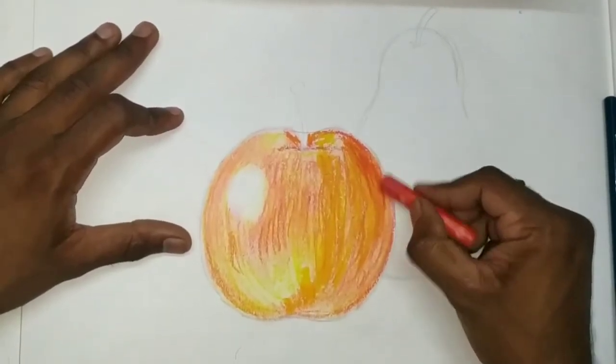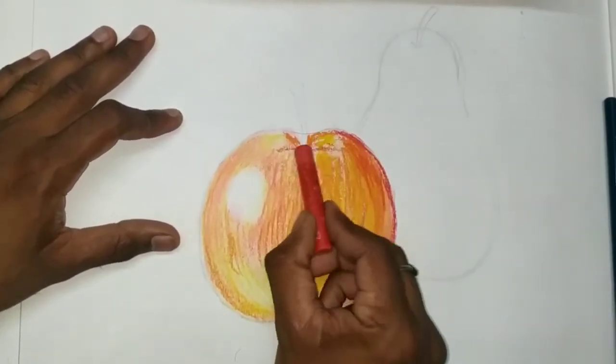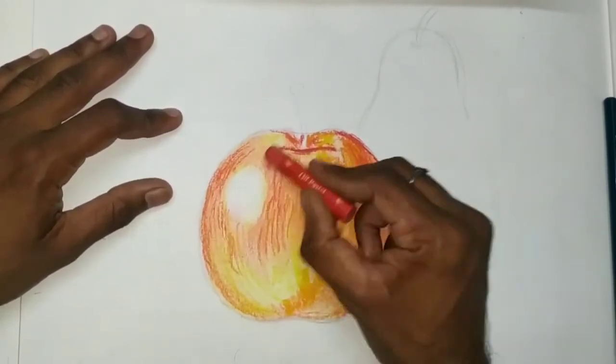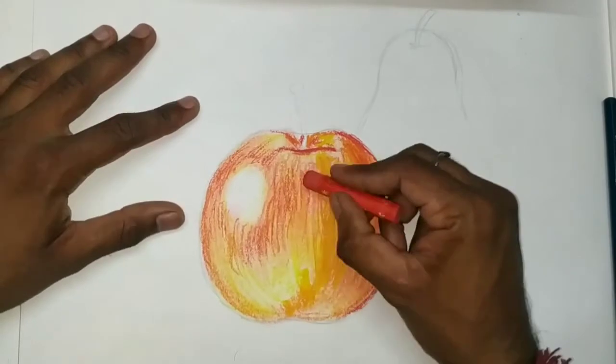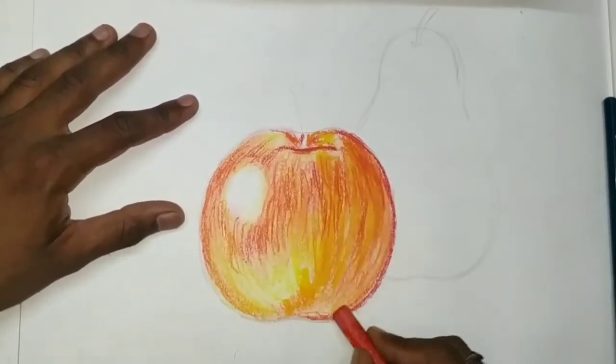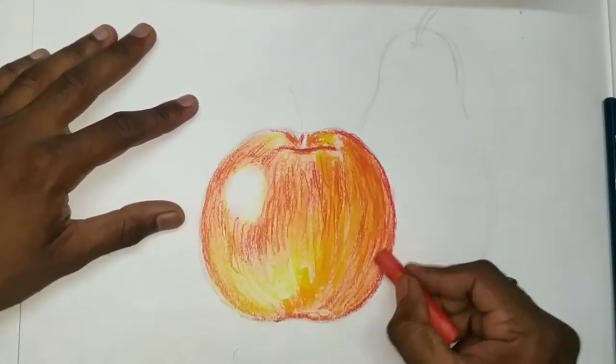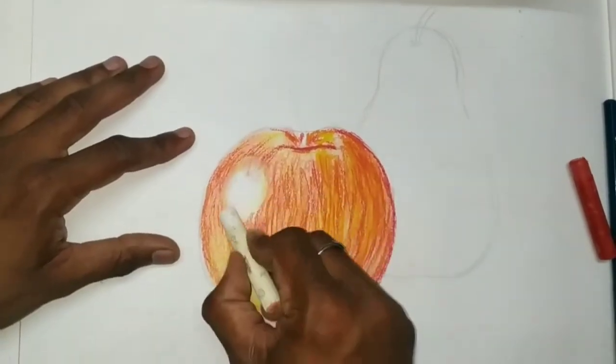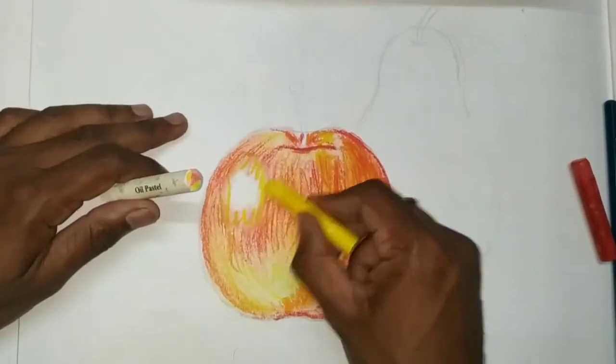Still life - what happens is that we have to copy the object. Copy the exact colors, the color tone, the light, the shades, the shadow. We have to observe and draw.